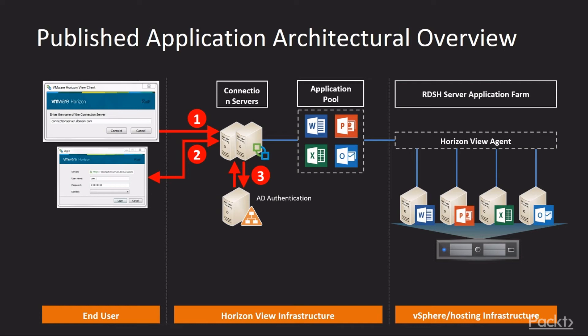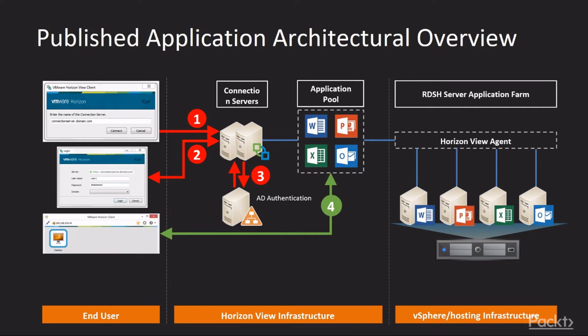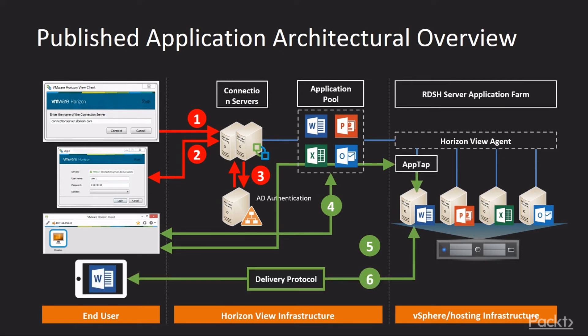A list of entitled desktop and application pools is then displayed to the end user in the VIEW client. The end user then double-clicks on an application or a desktop to launch it. The connection is made using the AppTap API, and the application is delivered via the delivery protocol — whether that's PC over IP or Blast Xtreme — to the end user's client device.